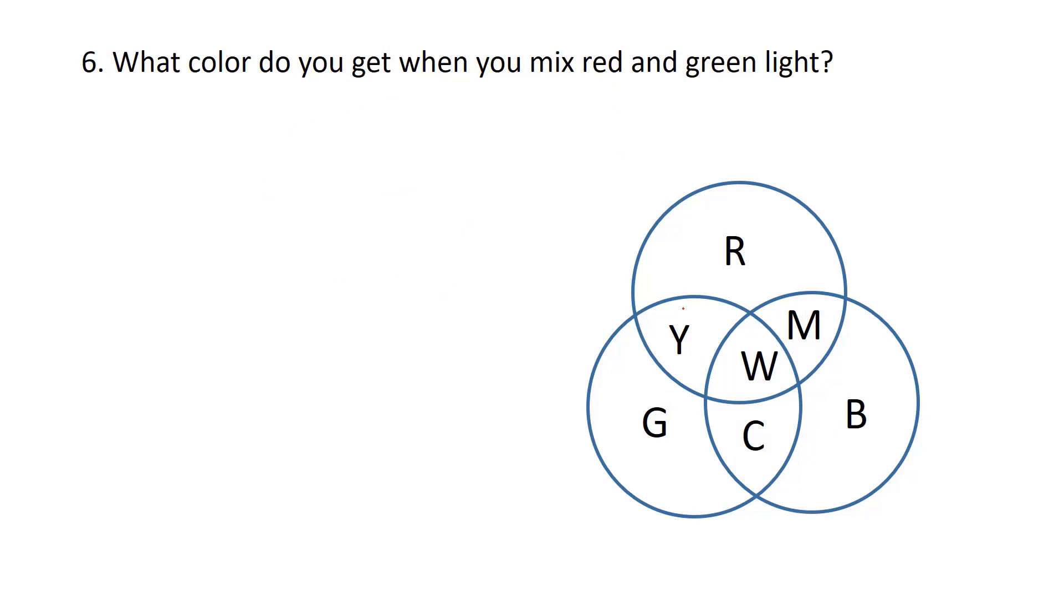What do we get when we mix red and green light? Okay, red and green light. Well, what's in between those? We're going to get yellow. What do you get when you mix red and blue light? Red and blue. What's in between those? We're going to get magenta. Magenta is that purplish color from the animations before.